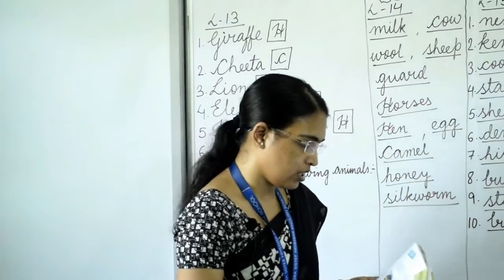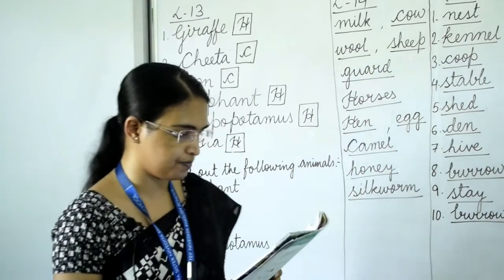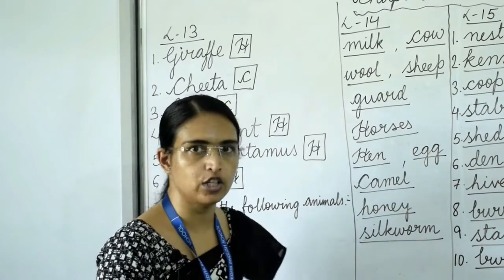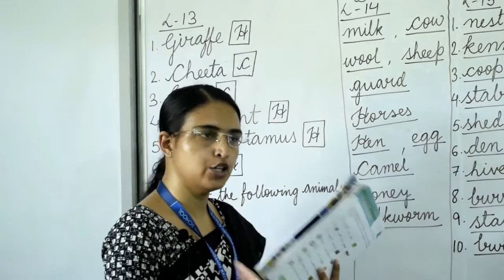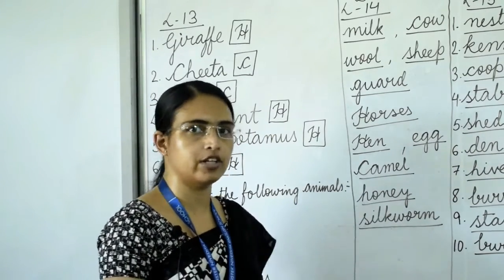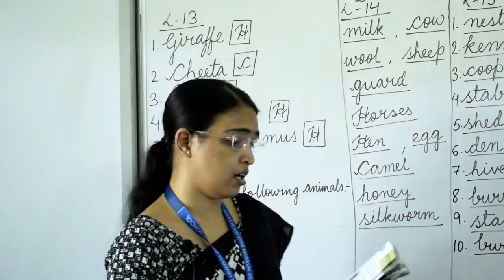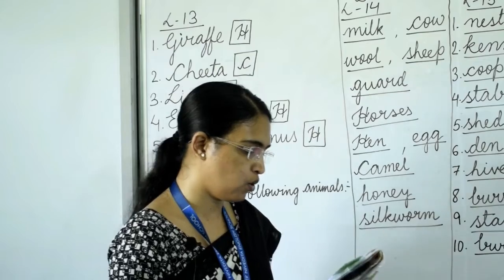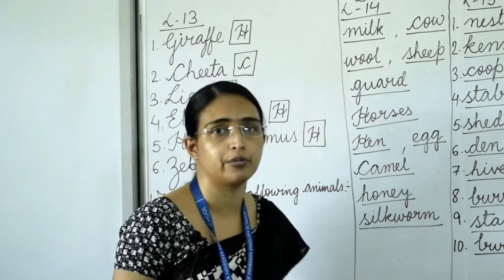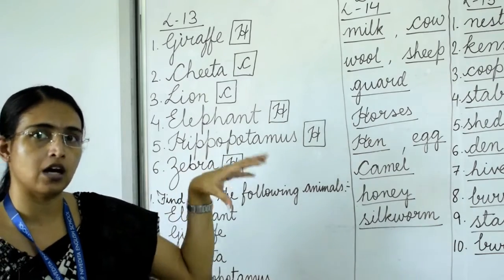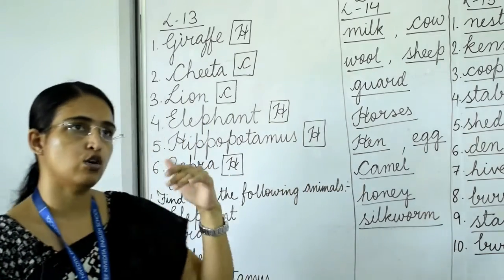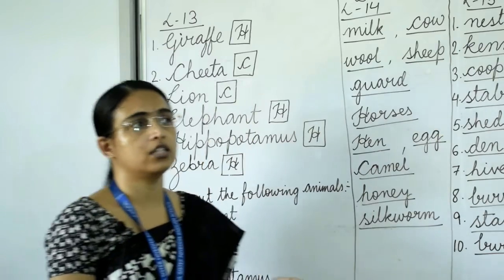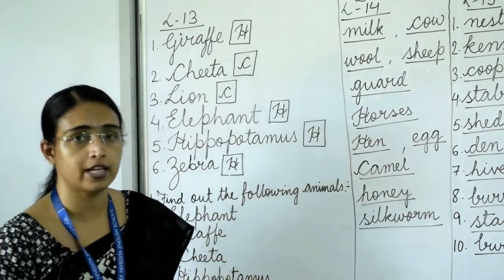Now turn the page to lesson number 15 — homes of animals. Every animal needs some kind of shelter to live in, just like humans. People build homes for domestic animals, while other animals make their own homes or find a suitable place to live in. Wild animals, insects, and birds make their own homes or find suitable shelter.